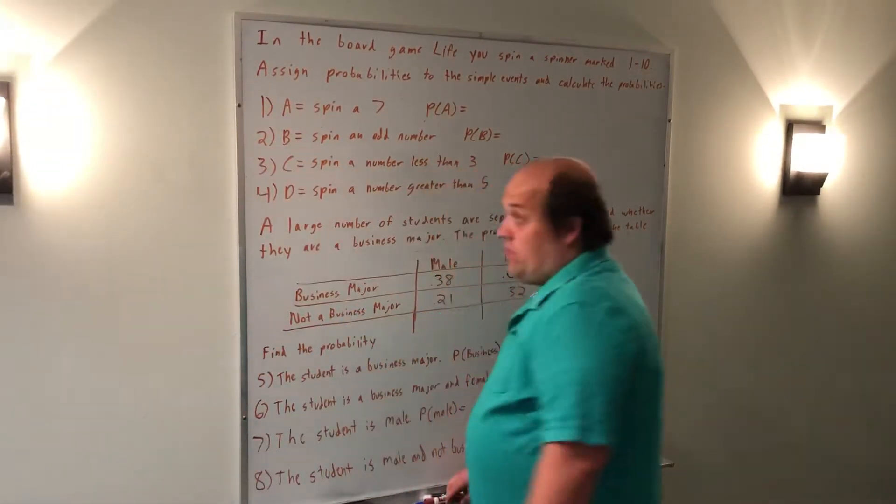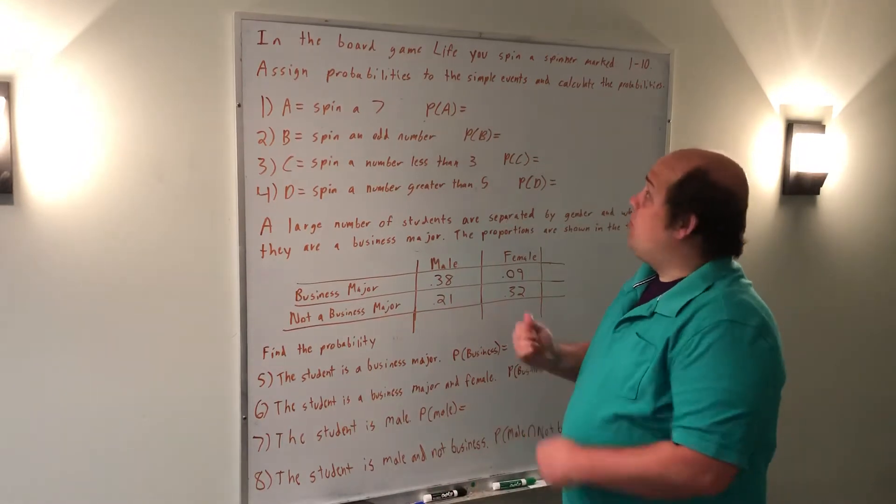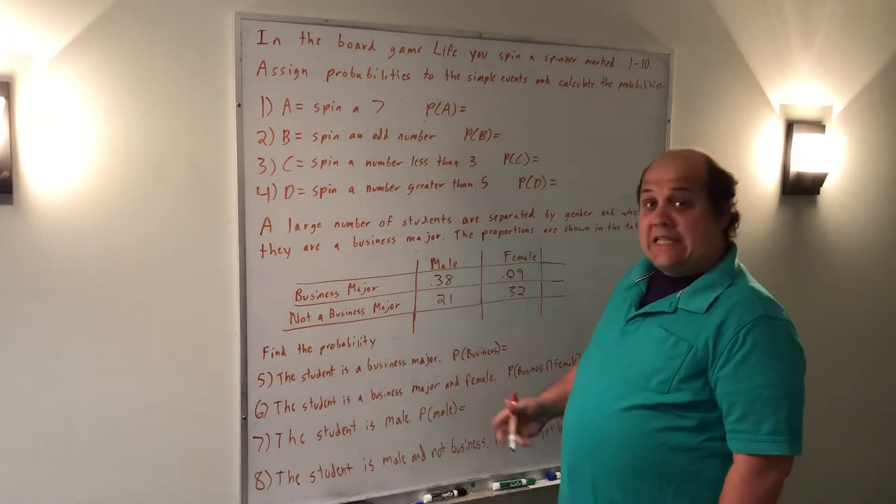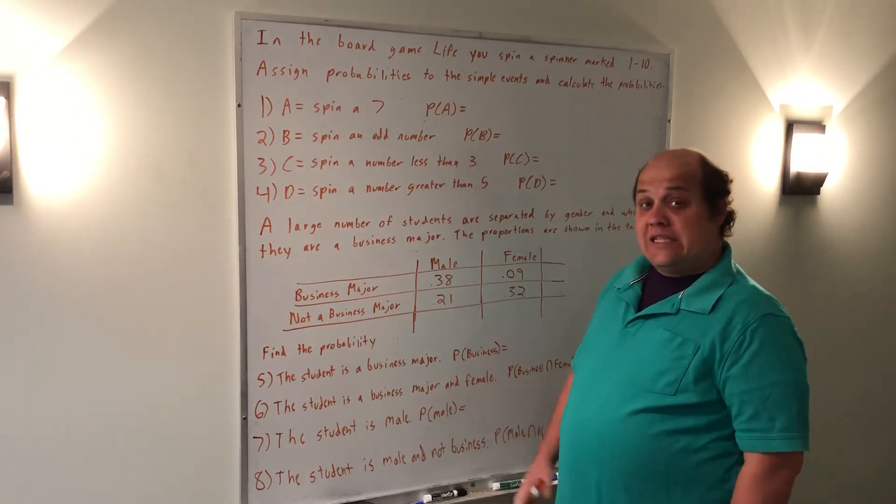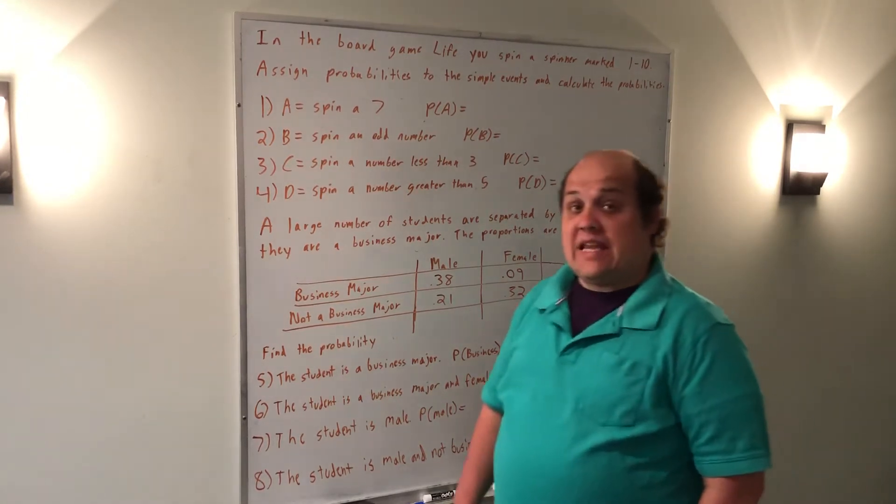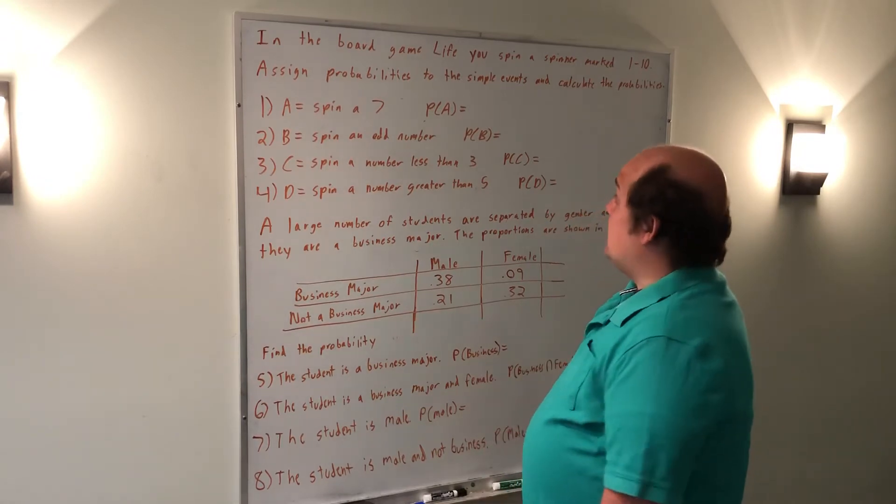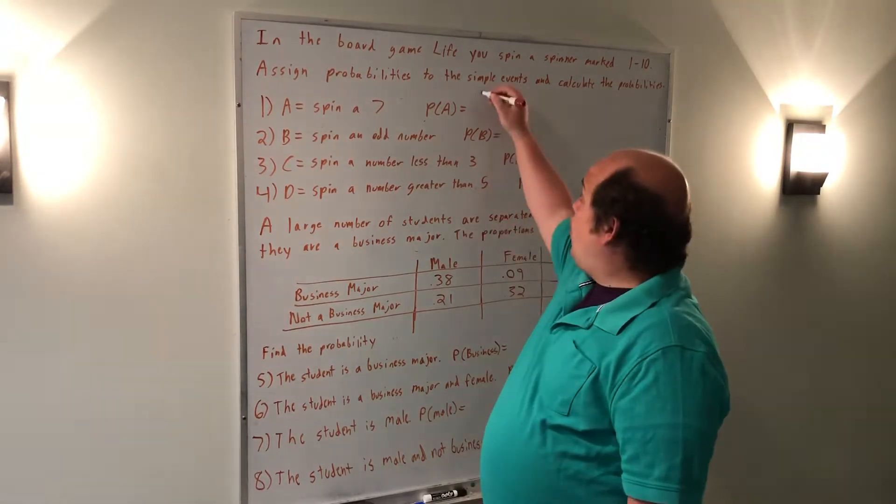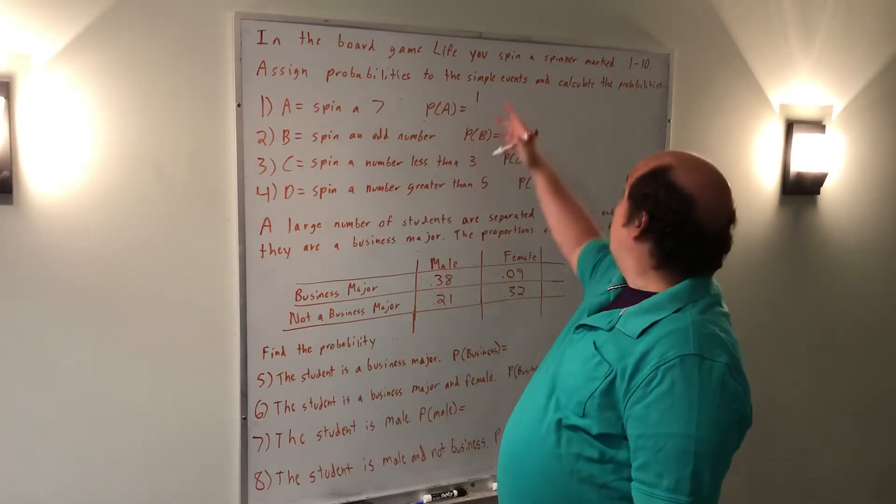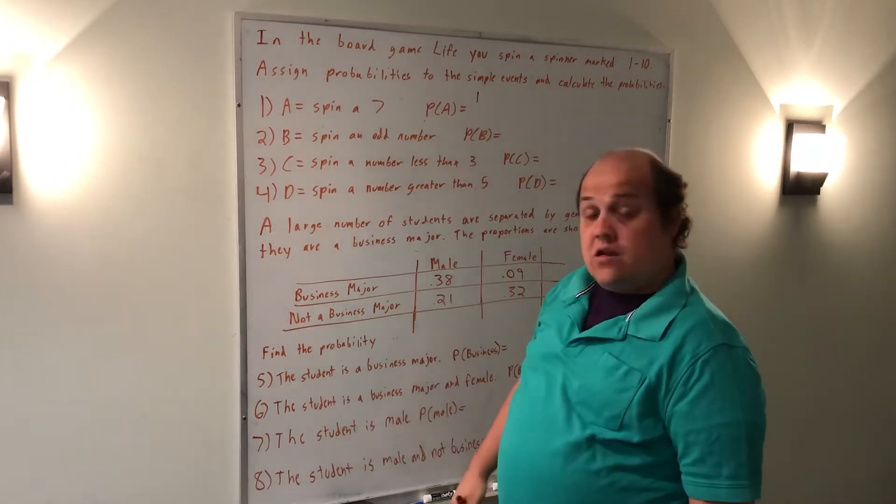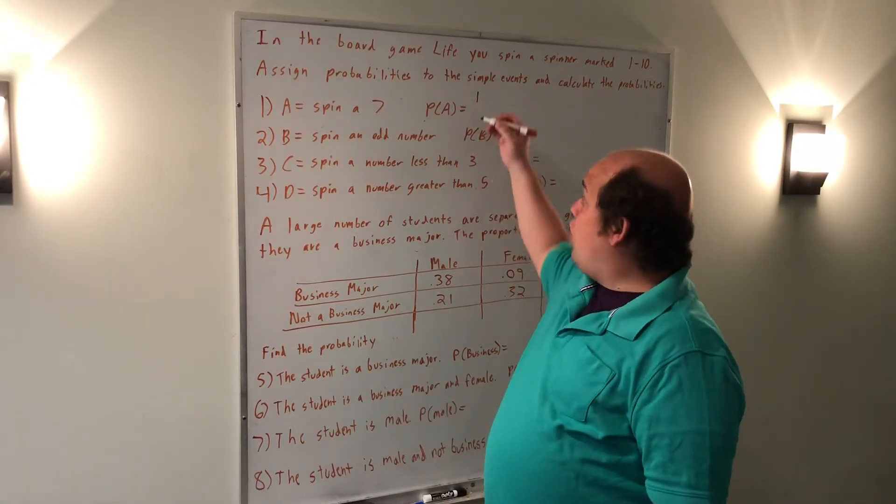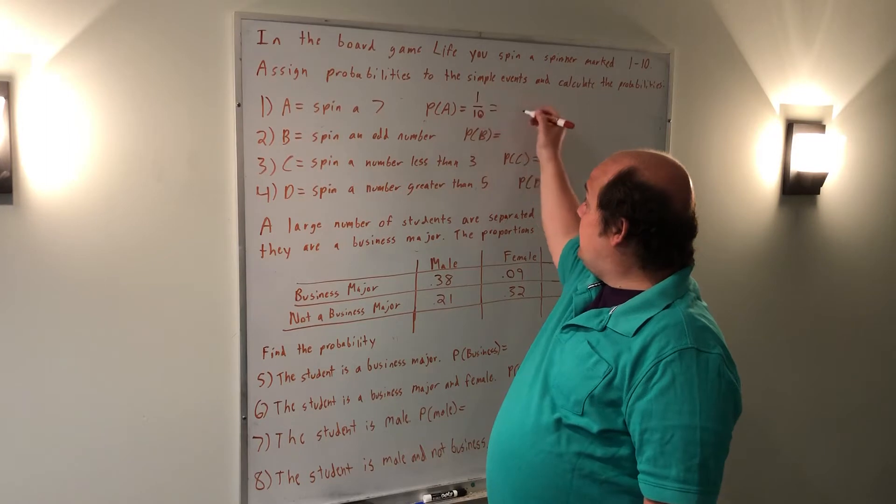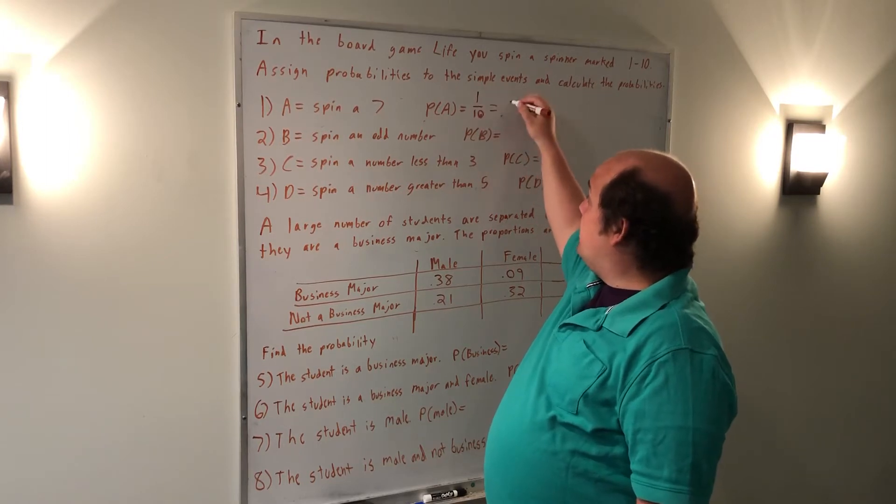We're going back to the problem from the previous classwork about the game of life where I spin a spinner marked 1 to 10. In this case, we're trying to find probabilities as opposed to just defining the events. We previously knew that only a 7 counted as spin a 7 - that's one event. When spinning a spinner marked 1 to 10, there's 10 possible events. Since they're all equally likely, the one event that counts out of the 10 possibilities tells us the probability is 0.1.